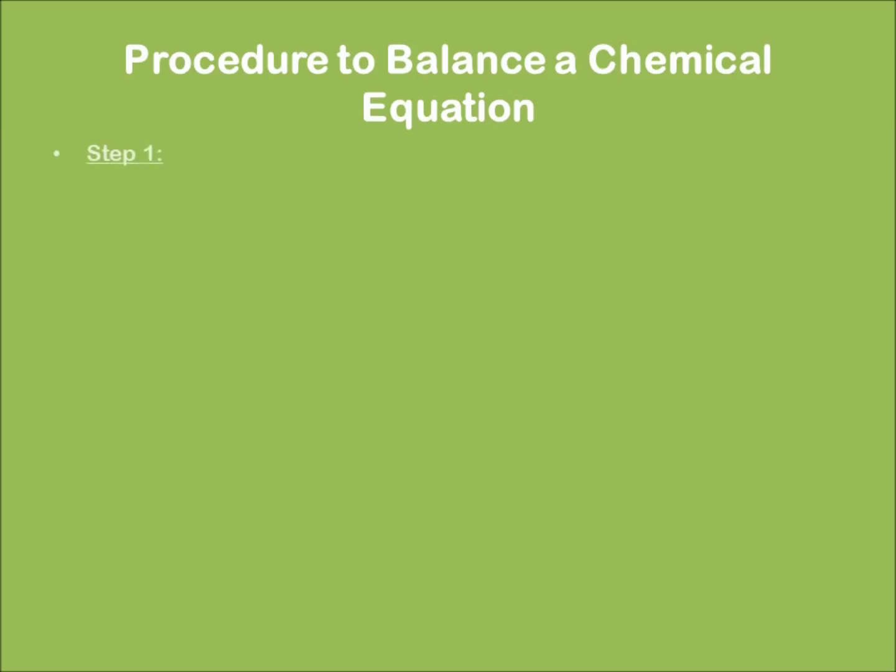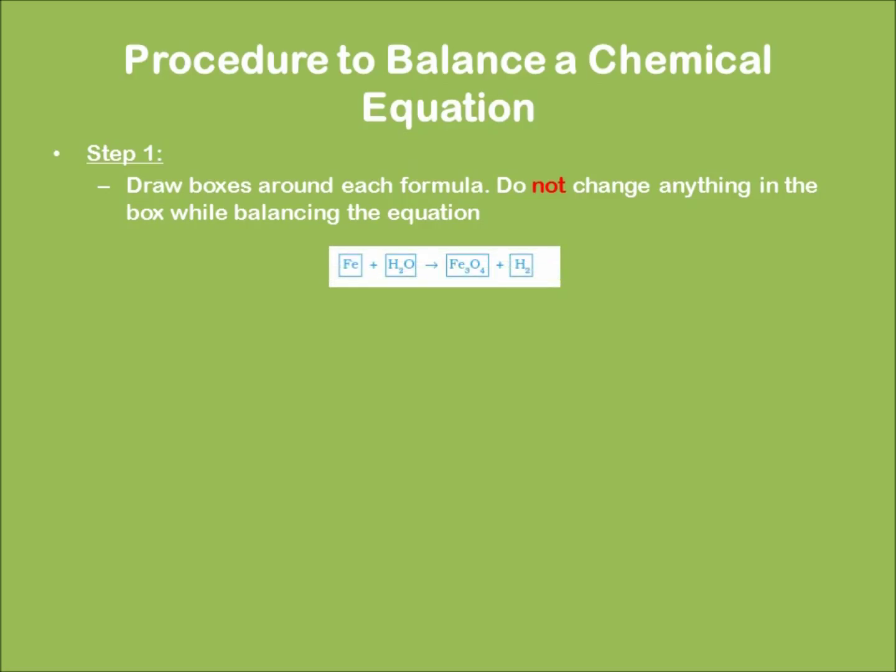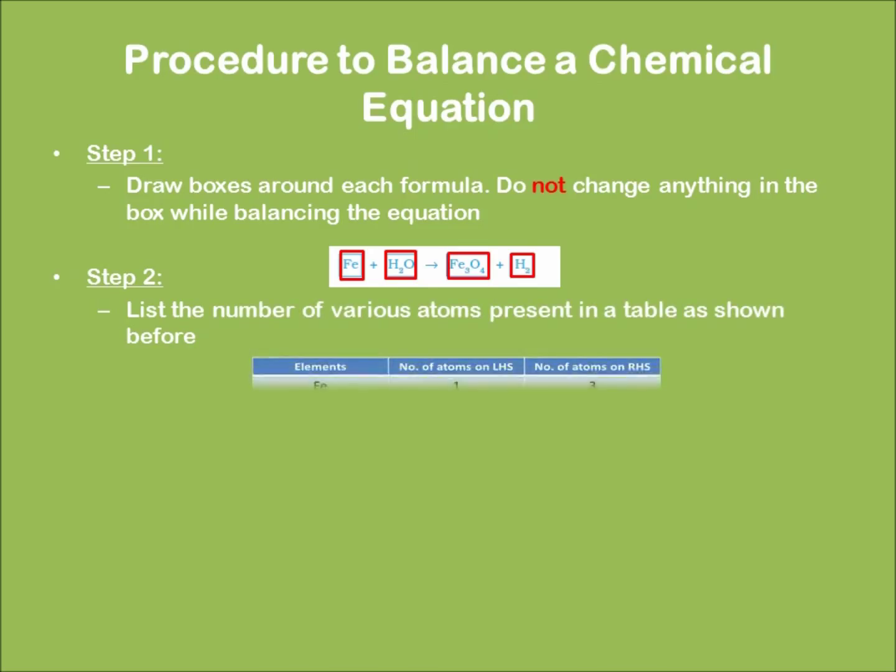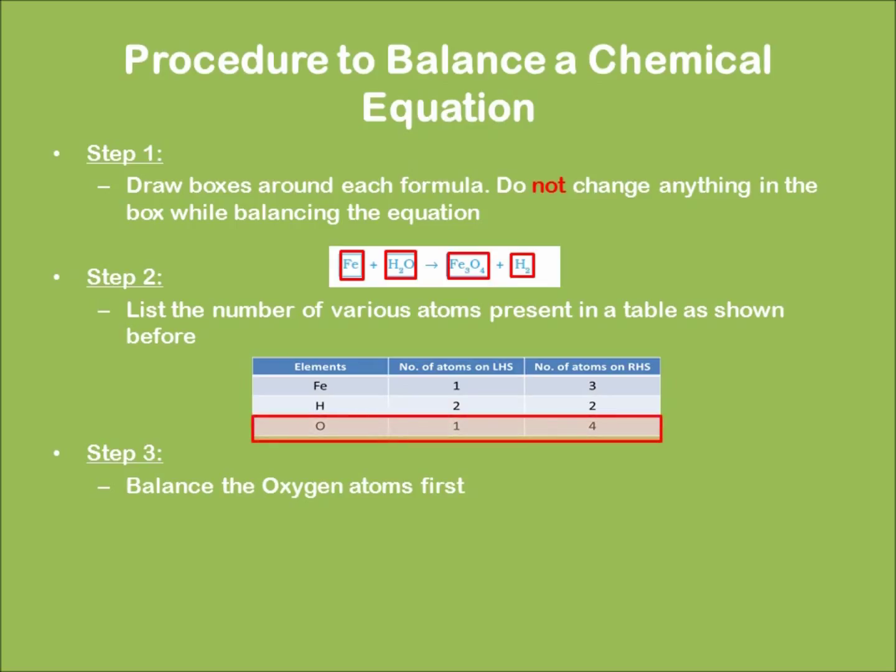Step number one: We have to draw a box around each formula and ensure that we do not make any changes inside this box. Step number two: List down all the atoms given in the chemical equation in a tabular form. Step number three: Start balancing by balancing the oxygen atoms first. Observe the table. One can clearly see that we have four atoms of oxygen on the right and one on the left. So to balance it, I multiply by four on the left. So my equation becomes the following one.